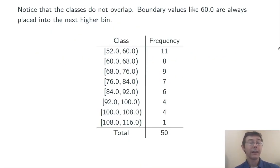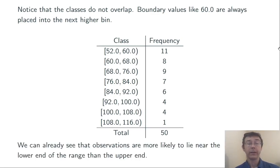Again, notice that the classes do not overlap and that they always have the same width. That way, every observation falls into one and only one class. Also, notice that the total of all the frequencies is the size of the dataset. In this case, 50.